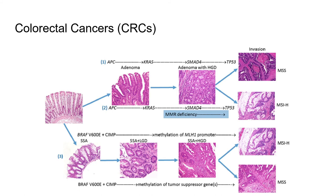Methylation of the MLH1 promoter, resulting in repressed expression of the MLH1 gene, is the most common cause of MSI in colorectal tumors, and accounts for approximately 12% of all colorectal cancers. MSI is a subset of the total colorectal cancer population.